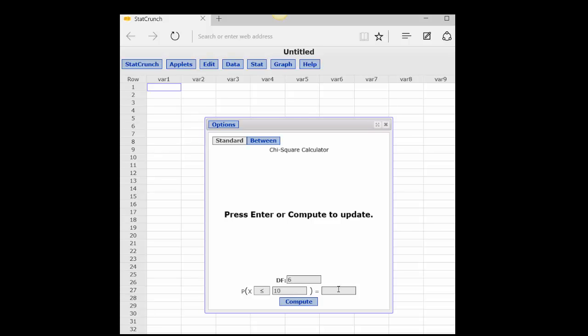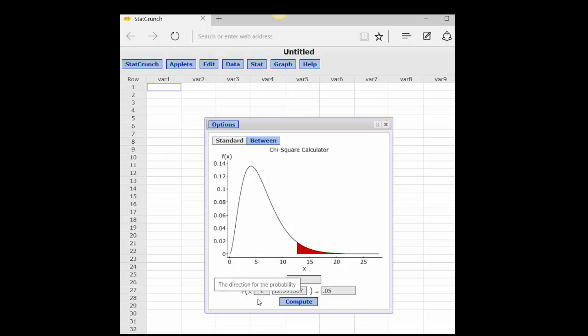And I want our 95% again, .05 for the alpha. And I compute, and I want this to be right-hand, because normally with a chi-square, we're dealing with right-hand distributions. And the critical value is 12.592. Okie doke.